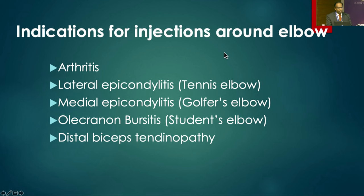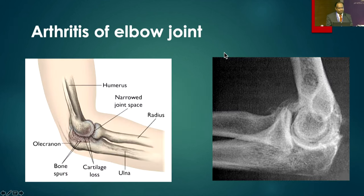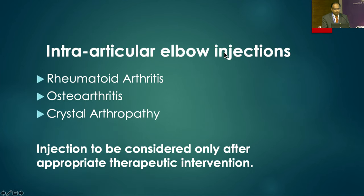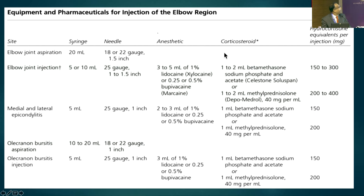Indications for injections around the elbow are pain due to arthritis, lateral epicondylitis, medial epicondylitis, olecranon bursitis, and distal biceps tendinopathy. In arthritis of the elbow there is a reduction in joint space. The elbow joint is formed by the radiocapitellar and ulnohumeral joint, with stability provided by soft tissues, tendons, and ligaments. Intra-articular elbow injections are given in rheumatoid arthritis, osteoarthritis, and crystal arthropathy and should only be considered alongside appropriate therapeutic interventions.